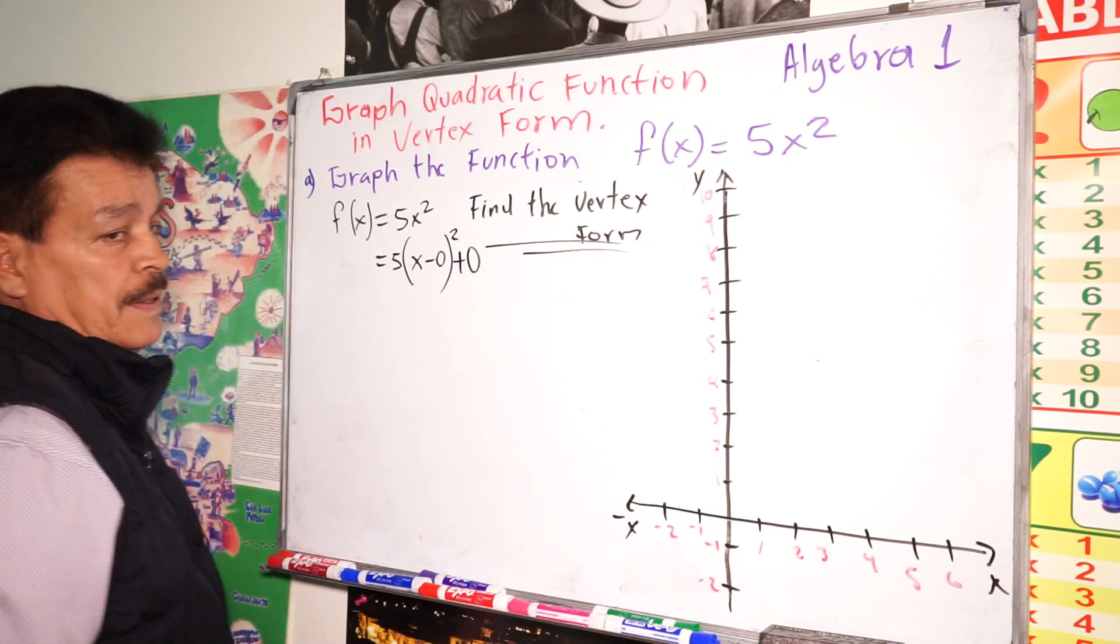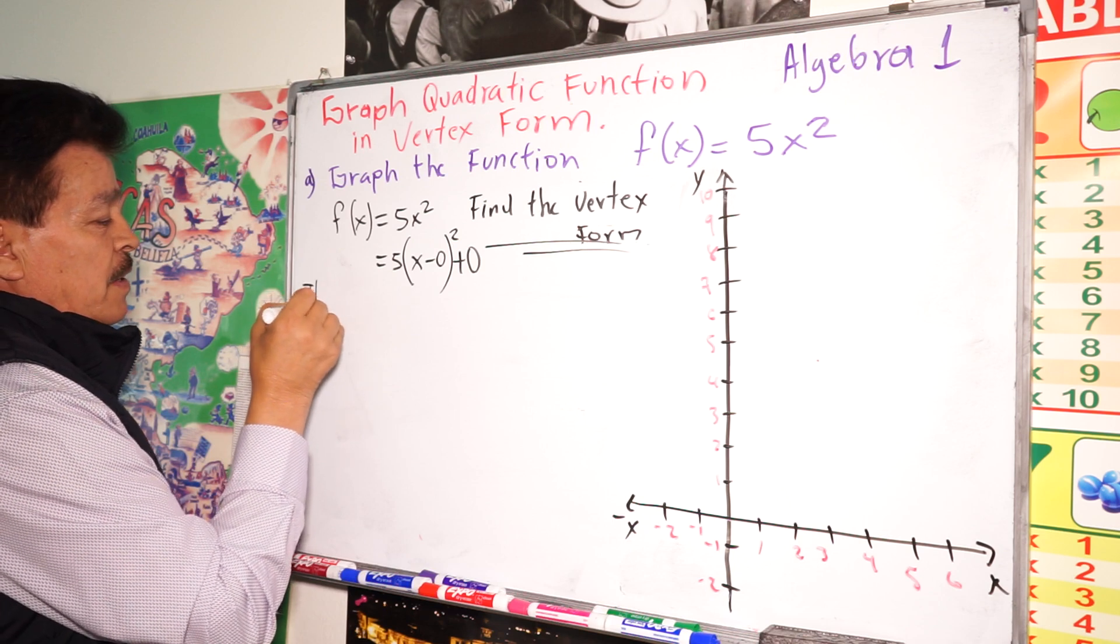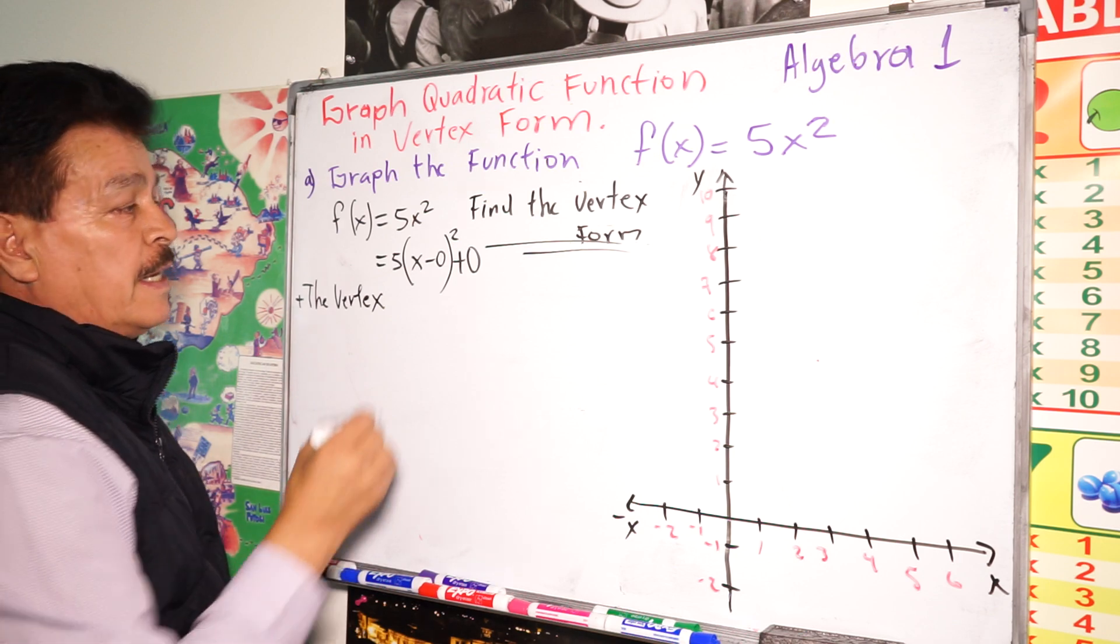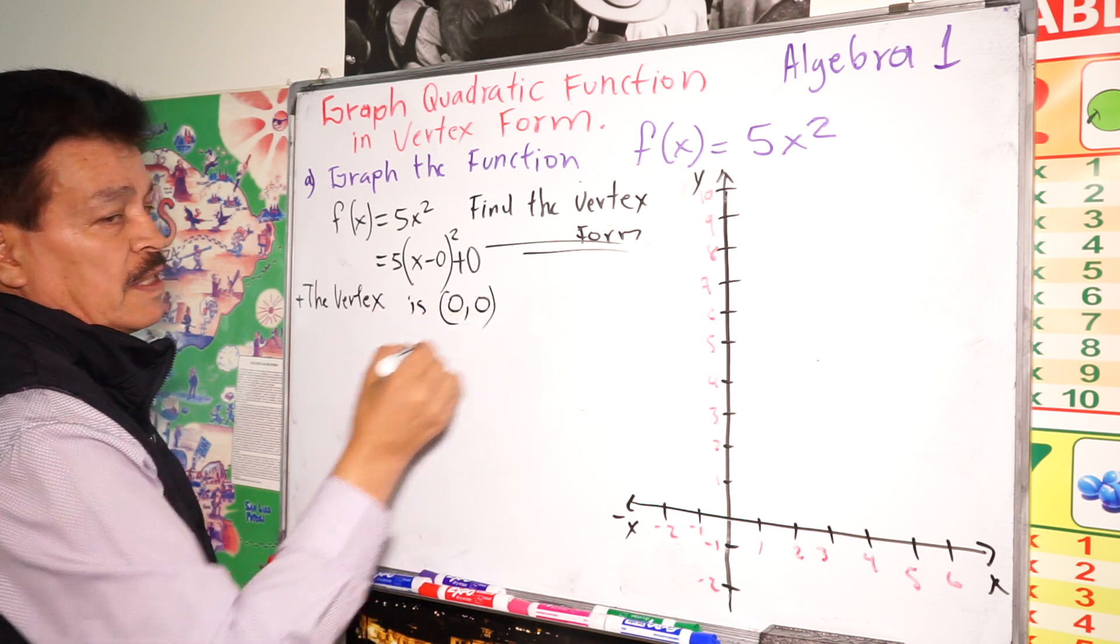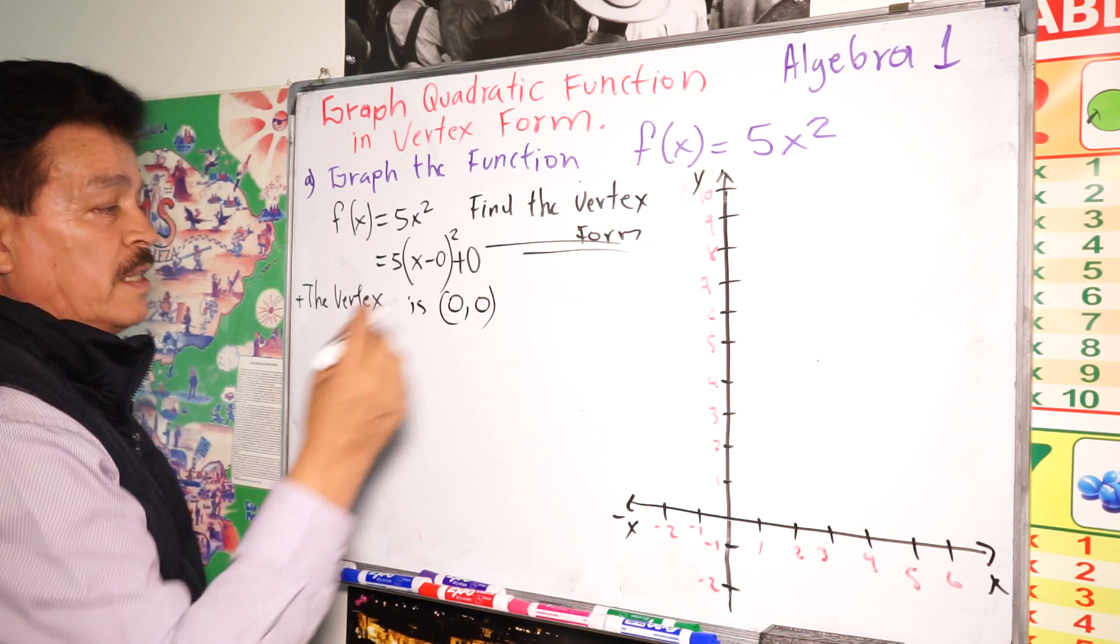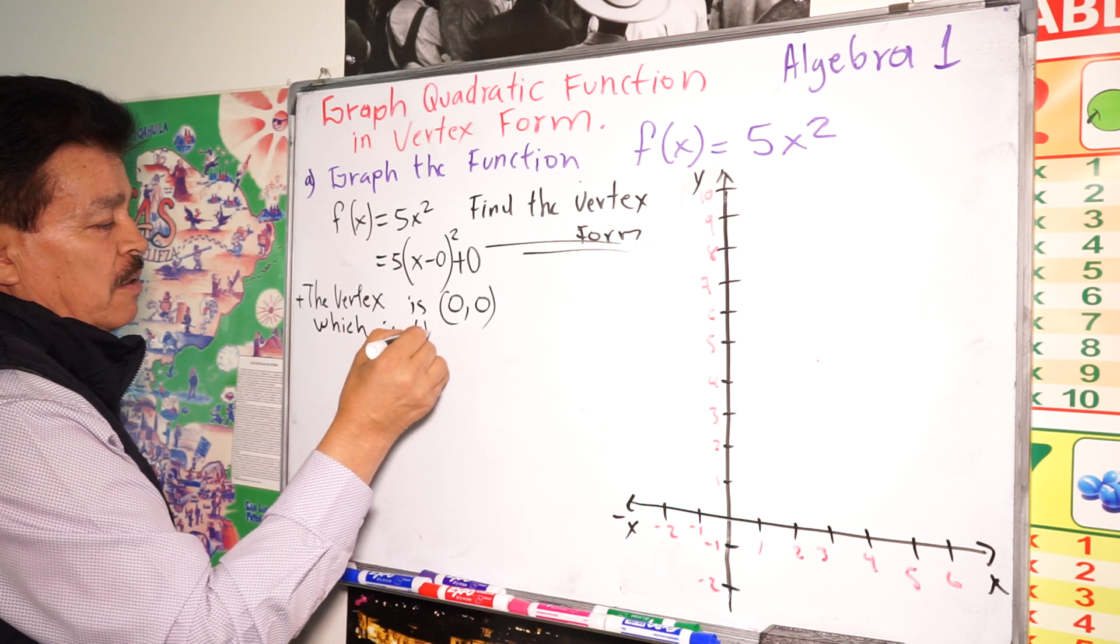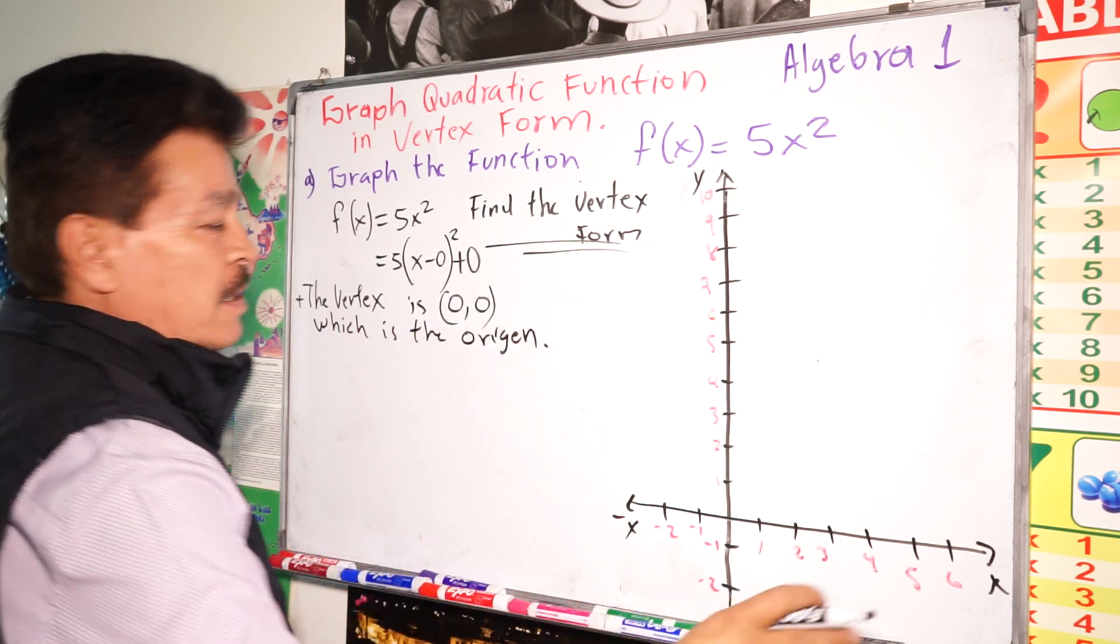So the vertex, in this case, is (0, 0). This is the vertex, which is the origin. This is the origin.